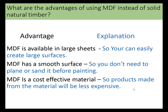The exam question asks: what are the advantages of using MDF instead of solid natural timber? Advantage one: MDF is available in large sheets, so you can easily create large surfaces. Advantage two: it has a smooth surface, so you don't need to plane or sand it before painting. Advantage three: MDF is cost-effective — you can buy a large sheet for a low price, making products like a child's toy box less expensive than one made from solid timber. In this question, you get one mark for the advantage and two marks for the explanation.